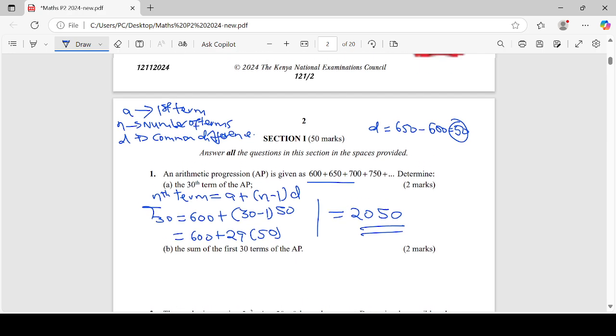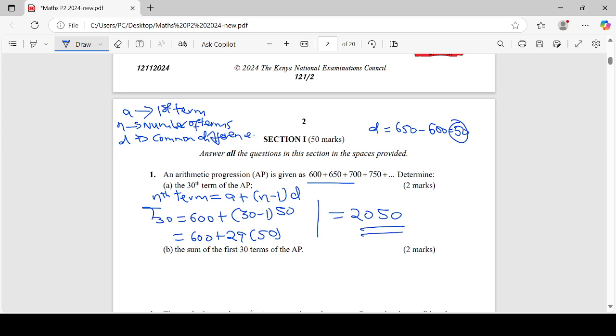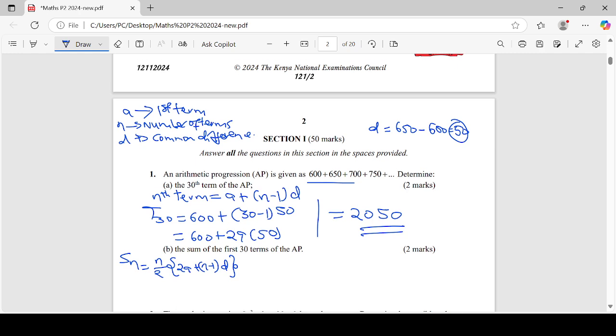Let's look at part B of the equation, dear learners. The sum of the first 30 terms of the AP. Now learners, to get the sum of n terms in AP we normally take n over 2 into 2a plus n minus 1 times d. That is the formula we use.